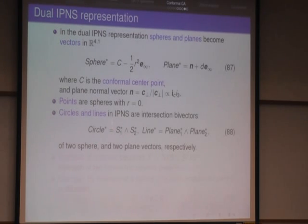And if you want to intersect two spheres, you get a circle. So using the inner product null space representation, you simply take the outer product of two spheres, and you get the circle, which is the intersection circle. If you take the outer product of two planes, it gives you a common line.